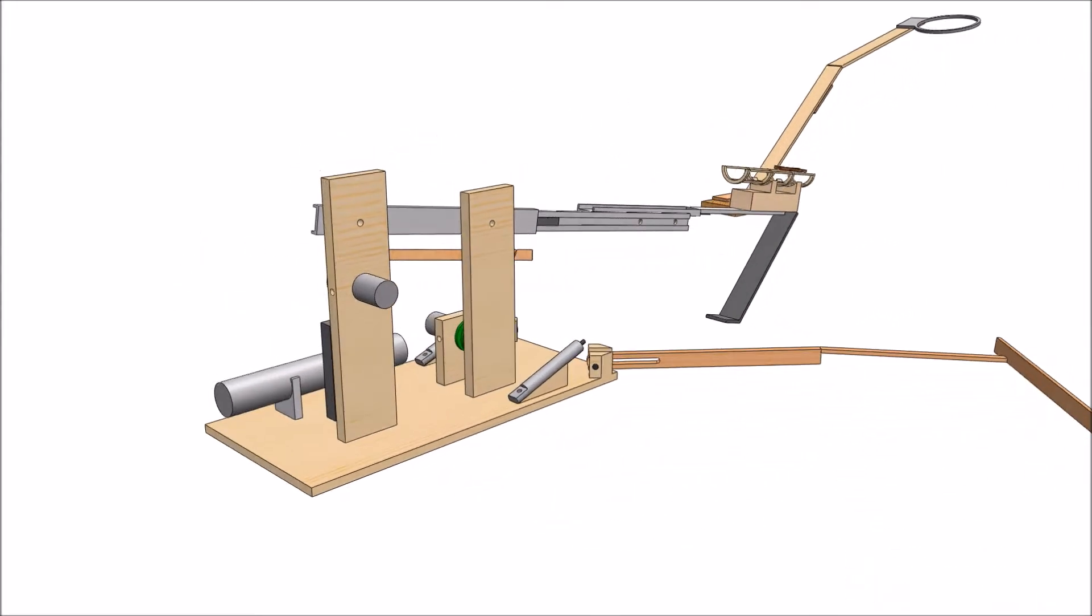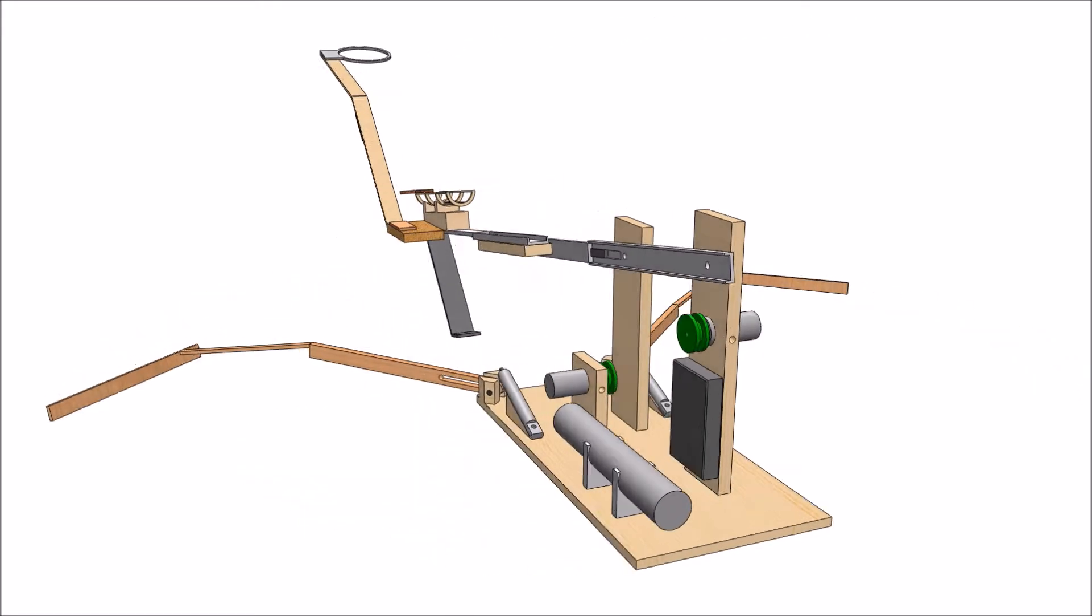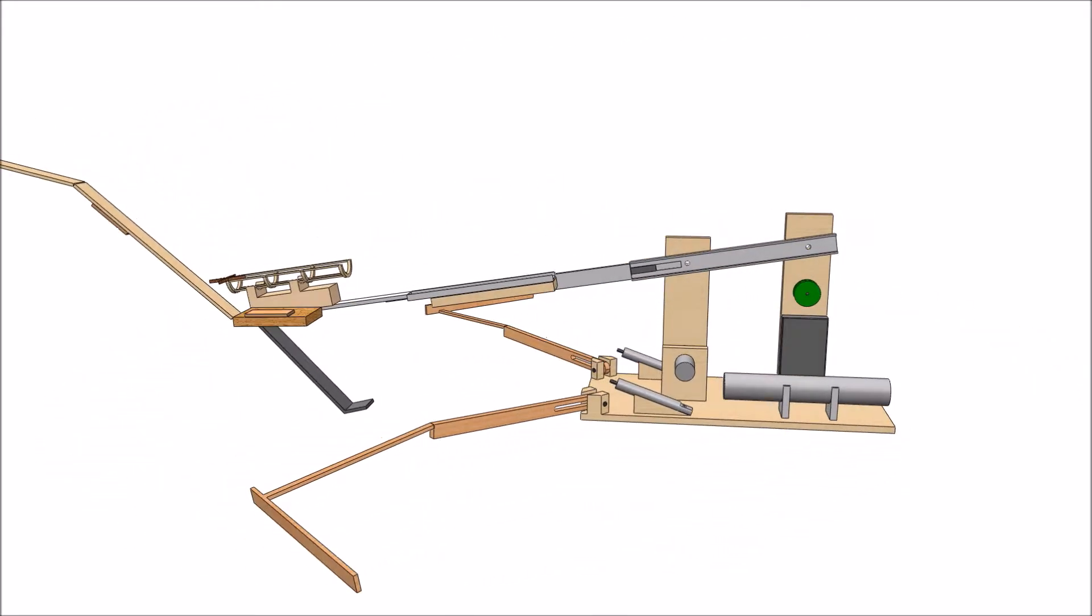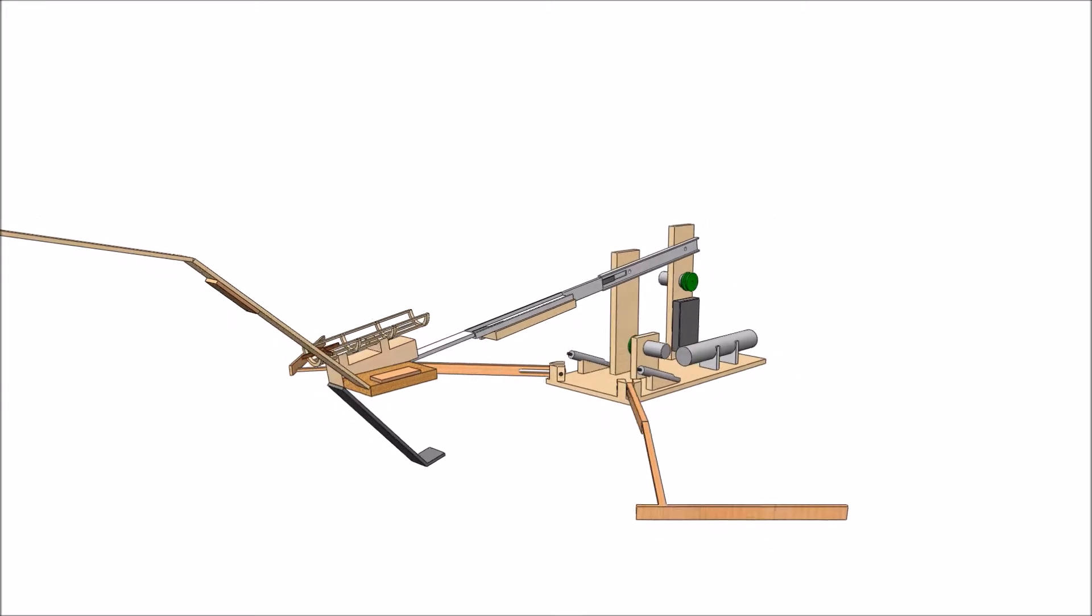Initially, the chute is held by a pin. A solenoid is activated shortly after the shrubbery arms are released in order to pull the mousetrap, which yanks the pin out of the chute, allowing gravity to pull the system down and out towards the Beast Slayer via the slides.